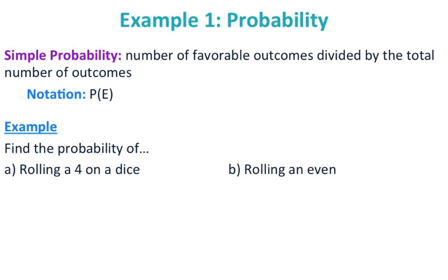The first thing we're going to look at is very simple probability. It's the number of favorable outcomes divided by the total number of outcomes. The notation you'll see is P of E.